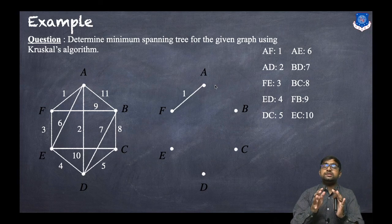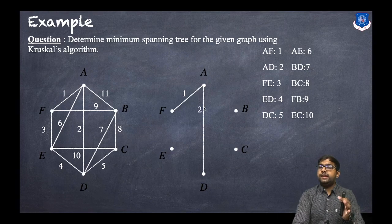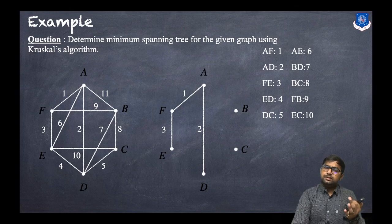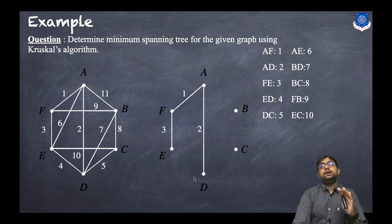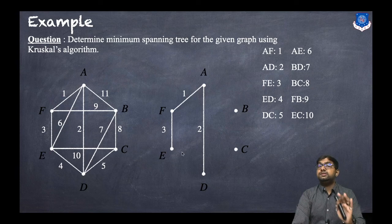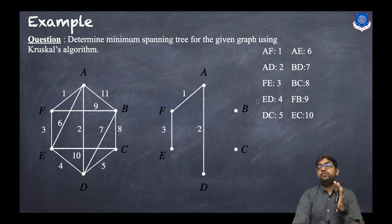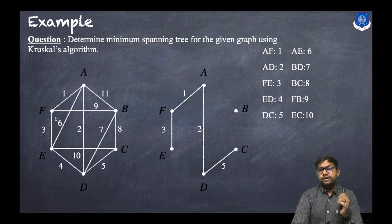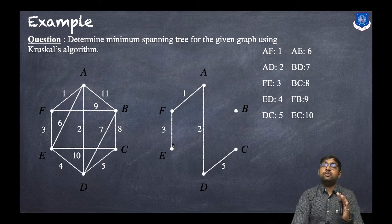Second, the next minimum edge is AD, so we take AD. Third, the next minimum edge is FE with weight 3, so we take that edge. Fourth, we consider ED. However, if we take ED, this graph will contain a cycle, which is not allowed in a minimum spanning tree, so we skip ED. We jump to the next edge, DC with weight 5, and we take that.